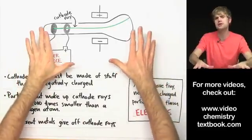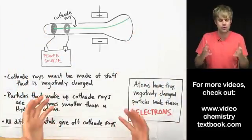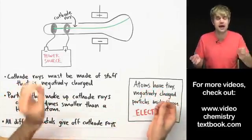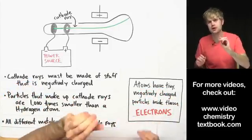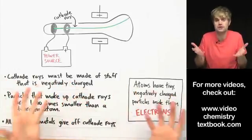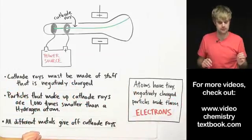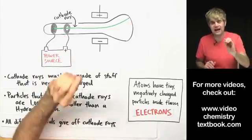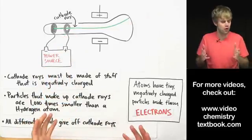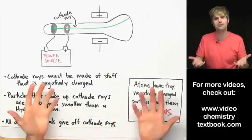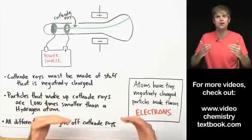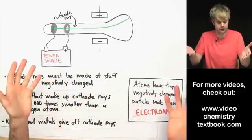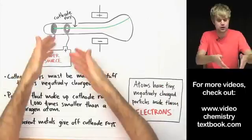At the time that Thompson does his experiment, everyone for the most part agrees that all things are made up of atoms, that atoms are the smallest things that make everything up. They're like the smallest things in the universe. So, if Thompson is able to show that there are even tinier things, well, where are those tiny things coming from? They have to be coming from atoms because everything is made of atoms, right? That's the only place they can be coming from.